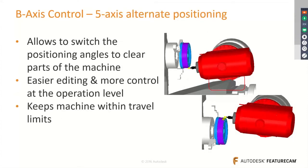Apart from that, you can control B-axis positioning to clear the path without hitting machine limits. For example, if the machine is colliding on one path, by repositioning the B-axis to the top side you can clear the component without any machine limit issues — this is the B-axis control facility inside FeatureCAM.